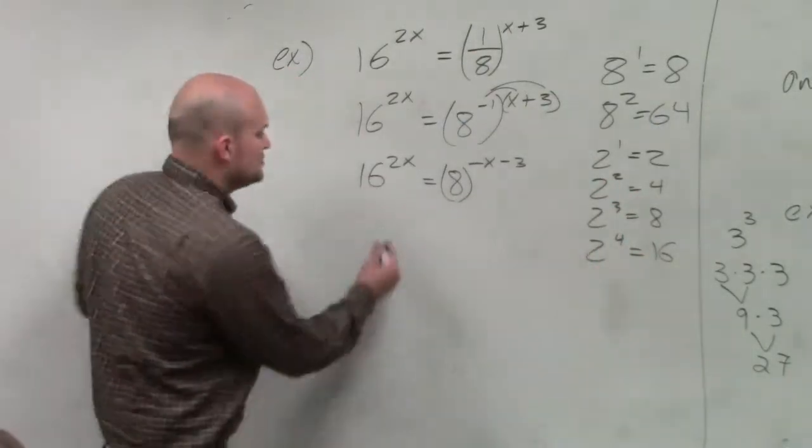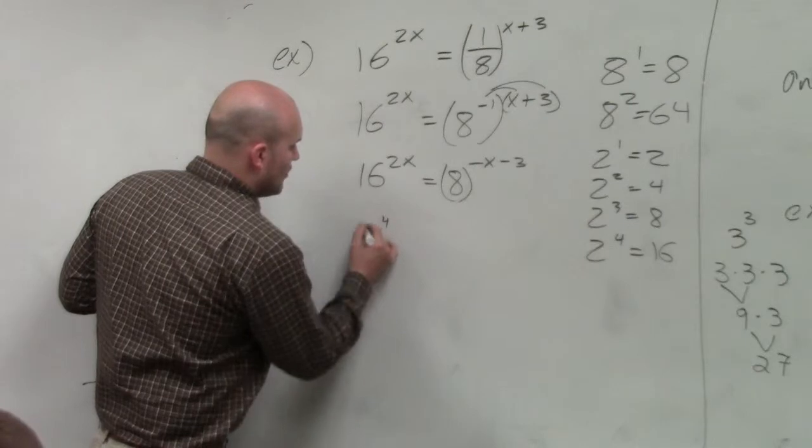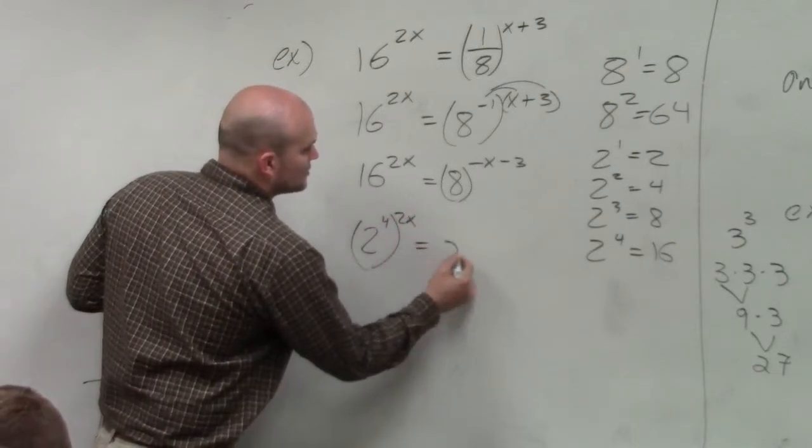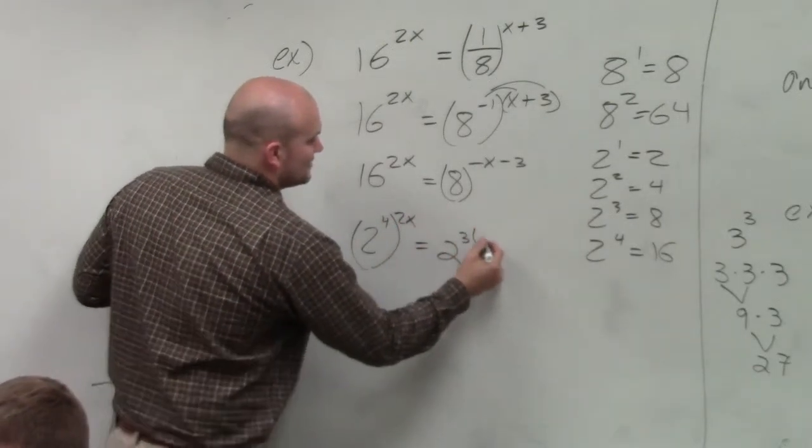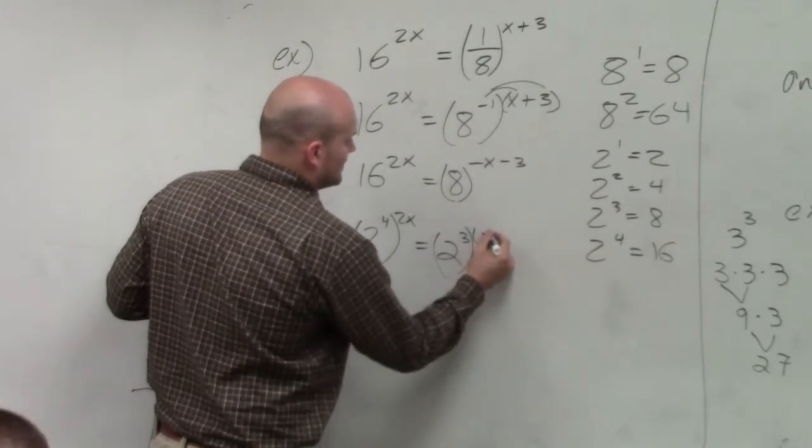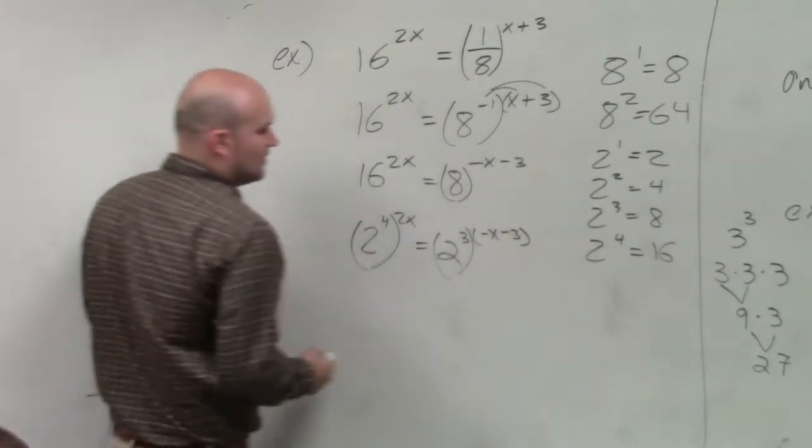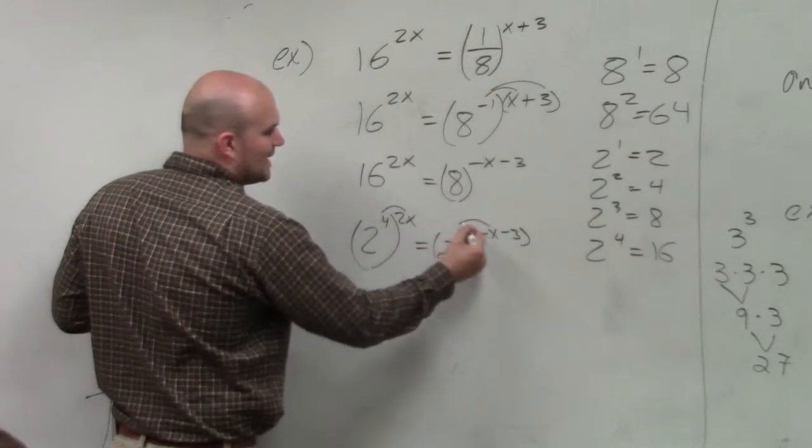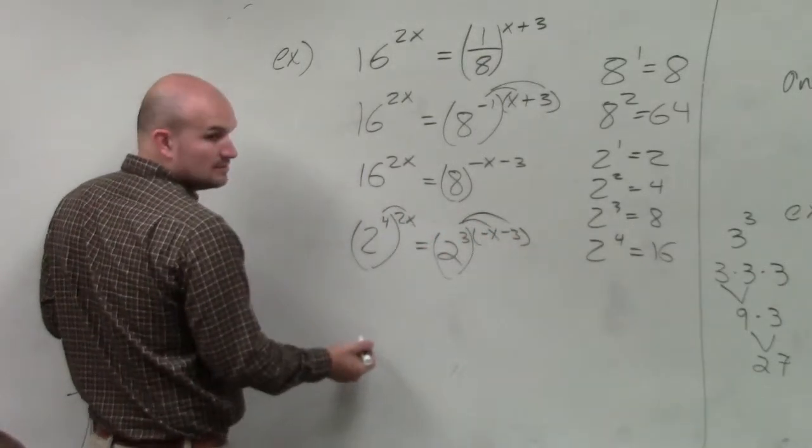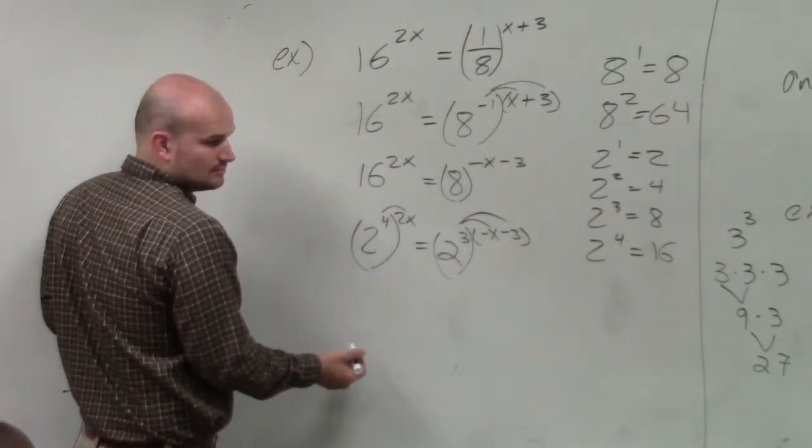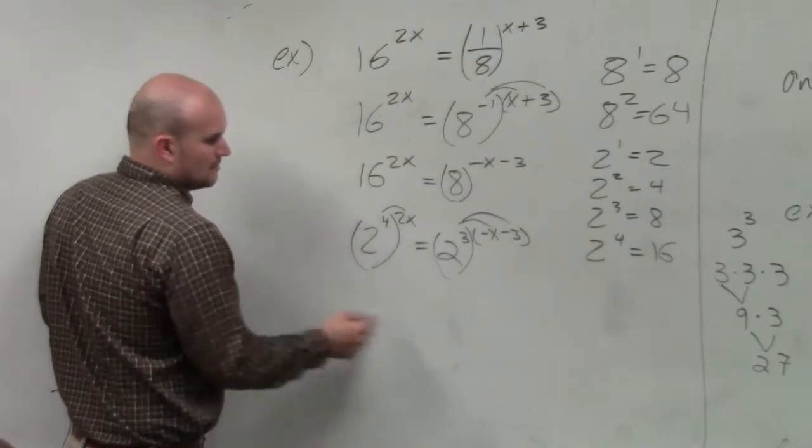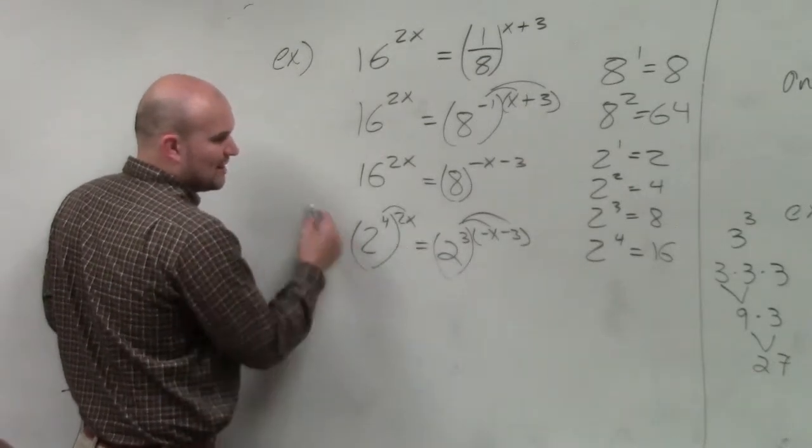And that's exactly what you need. So this is 2 to the fourth raised to the 2x equals 2 cubed raised to the negative x minus 3. Then you just multiply, again, your powers. You gave me a little bit better. Now, you multiply your powers.